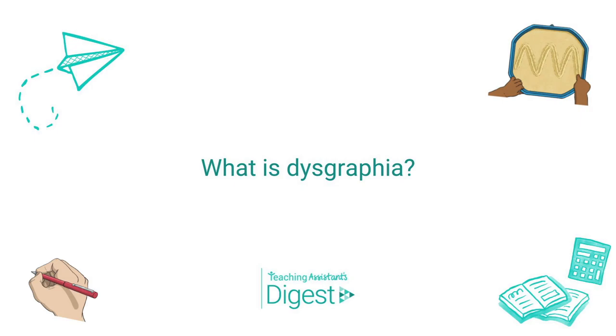What is dysgraphia? Dysgraphia is not well known. It shows itself with kids who have difficulty with handwriting, who have difficulty with planning to form letters and to be able to write.